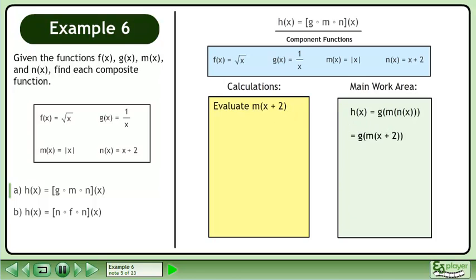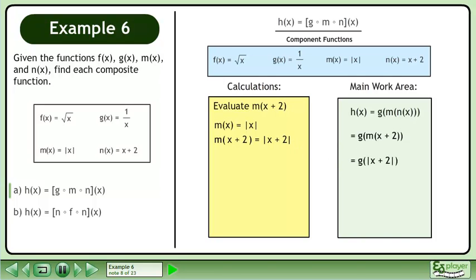Before we can continue, we need to evaluate m. We know that m equals the absolute value of x. So m equals the absolute value of x plus 2. In our main work area, we now have g at the absolute value of x plus 2.